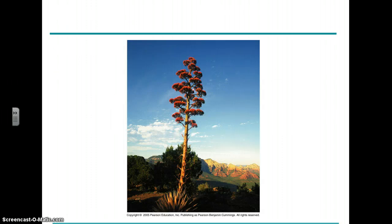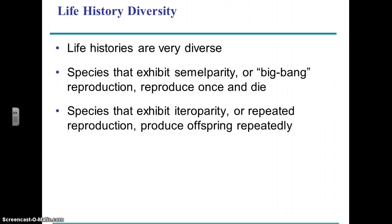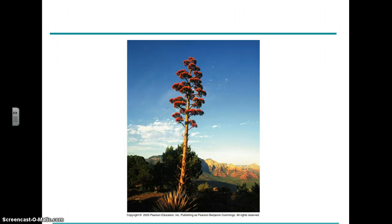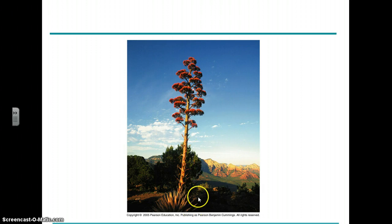Polycarpics are ones that have many reproductive episodes throughout their lifespan. An example of monocarpy in plants is the century plant — a relatively long-lived plant that only reproduces once, producing a large cluster of flowers on a stalk.